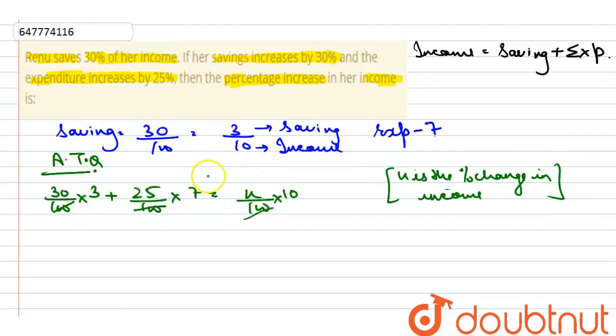So, we can write it as 90 plus 175 is equal to 10x. So, it becomes 265 divided by 10 is equal to x which is equal to 26.5.